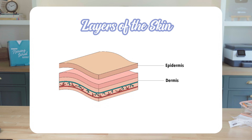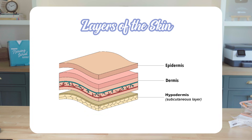Then we have the dermis, located beneath the epidermis. The dermis contains tough connective tissue, hair follicles, and sweat glands. It's responsible for the skin's elasticity and strength. Then we have the hypodermis, commonly called the subcutaneous tissue. This layer lies below the dermis and is composed mainly of fat and connective tissue. It helps insulate the body and cushions underlying muscles and bone.